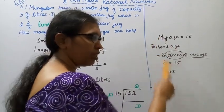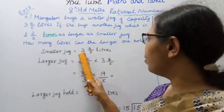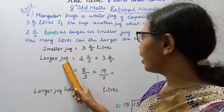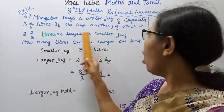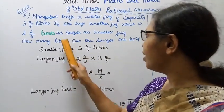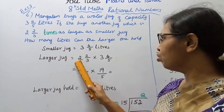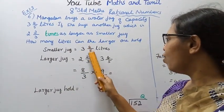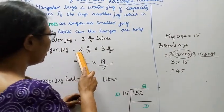Using the same example: smaller jug holds 3 4/5 liters. Larger jug holds 2 2/3 times of smaller jug. So larger jug equals 2 2/3 times smaller jug, which is 2 2/3 into 3 4/5.